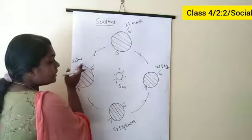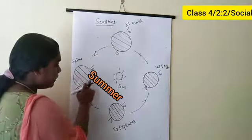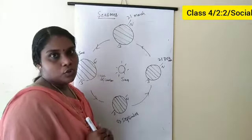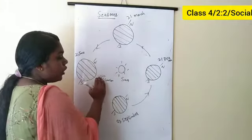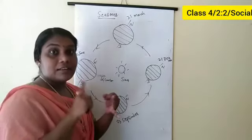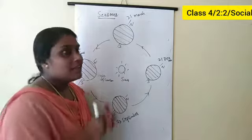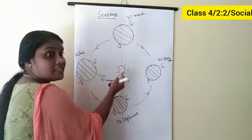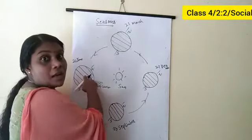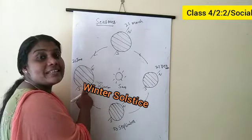When the north pole is tilted towards the sun in June, the northern hemisphere has summer and the southern hemisphere has winter. Around 21 June, the sun's rays directly fall on the Tropic of Cancer. This is called summer solstice in the northern hemisphere, and winter solstice in the southern hemisphere.